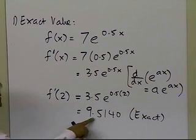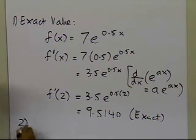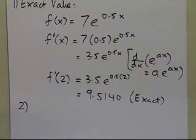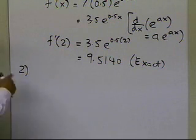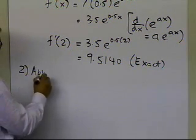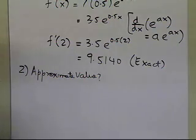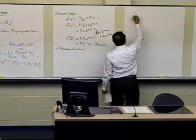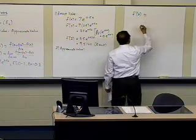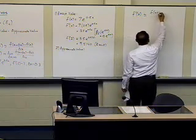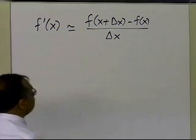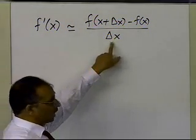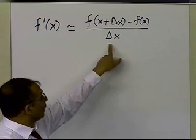You would get the same number using the exact limit definition of the derivative, though that's more lengthy, so here we applied the calculus formula directly. Now let's calculate the approximate value using the given formula: f'(x) ≈ [f(x + Δx) − f(x)] / Δx. This is just like the exact definition of the derivative, with the only difference being that delta x is now a finite number rather than approaching 0.